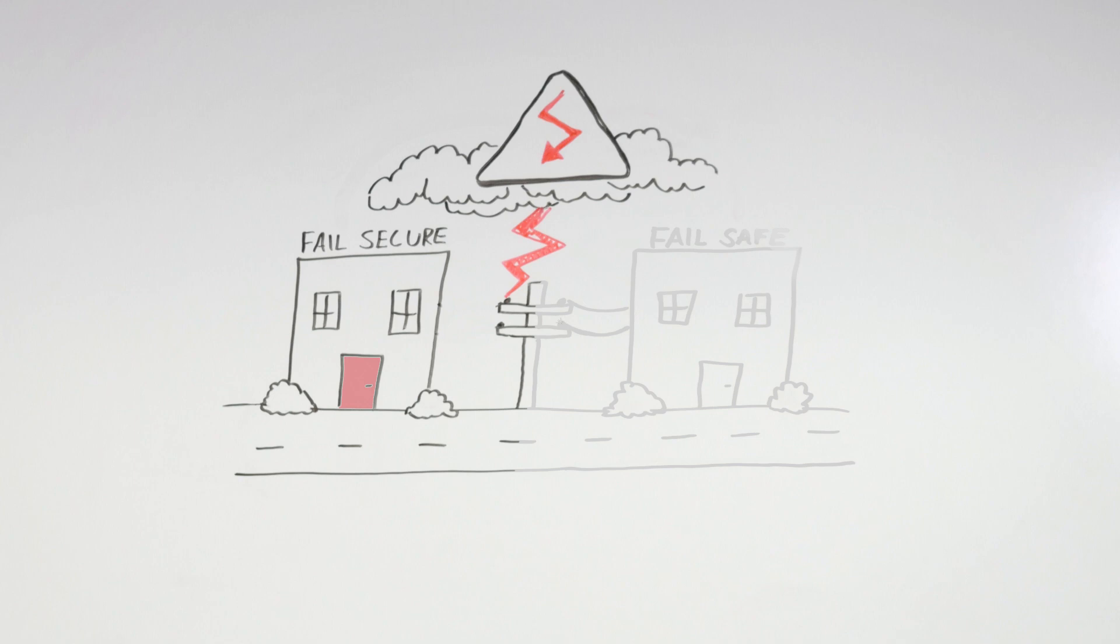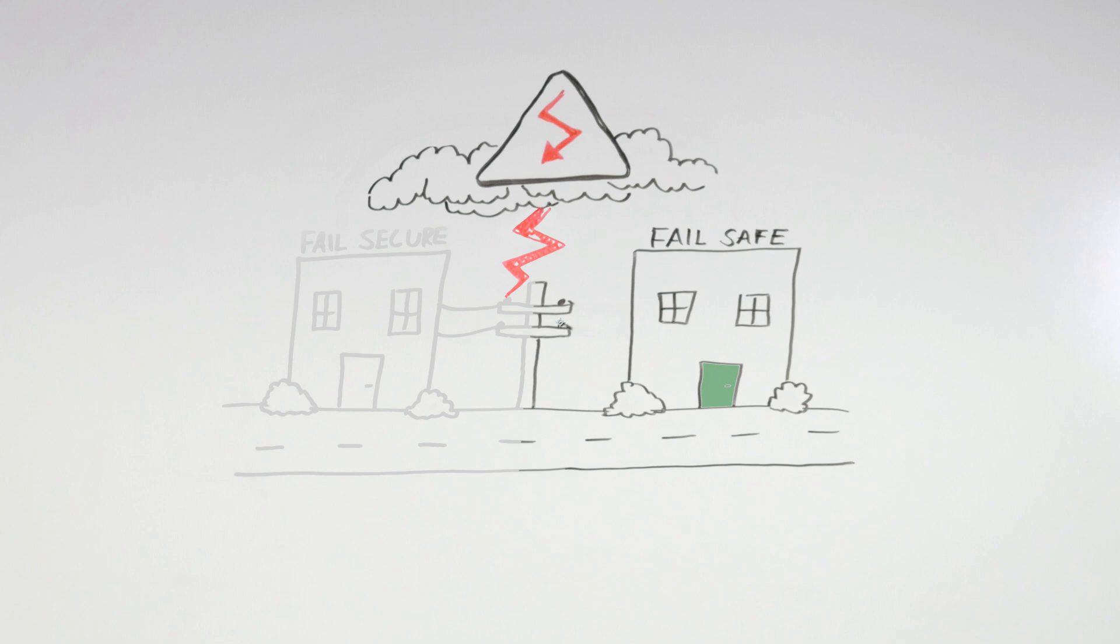Fail safe products are unlocked from the outside when they are not getting power. This means when power is cut, say because of severe weather, the fail safe product is unlocked. This also means to lock a fail safe product, power must be applied.